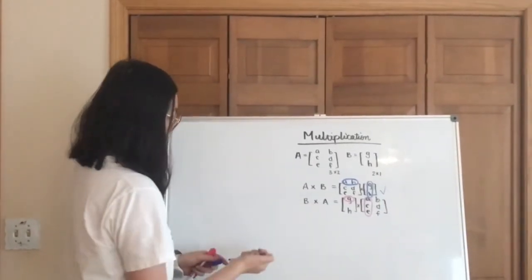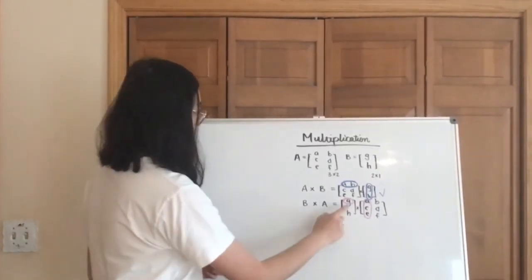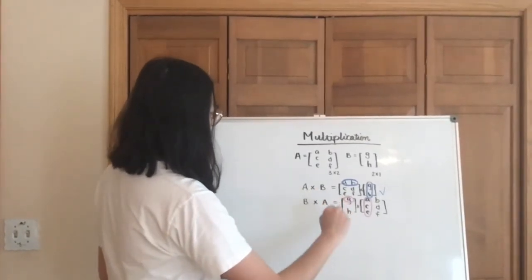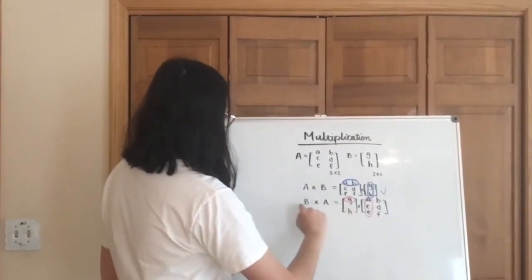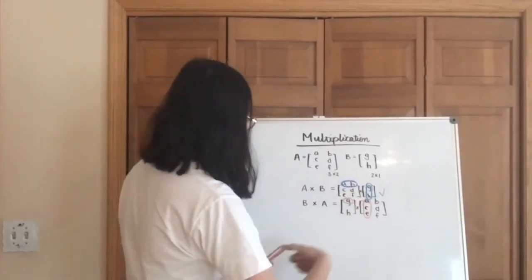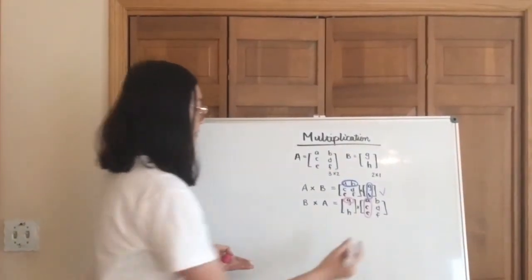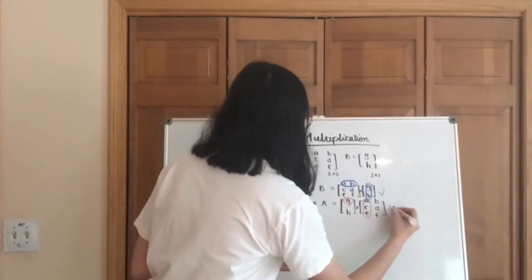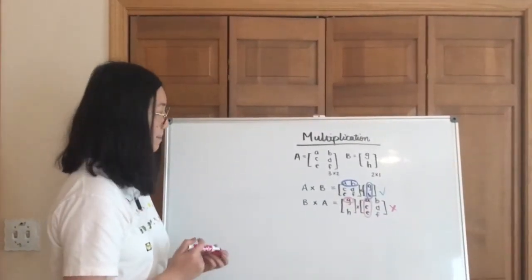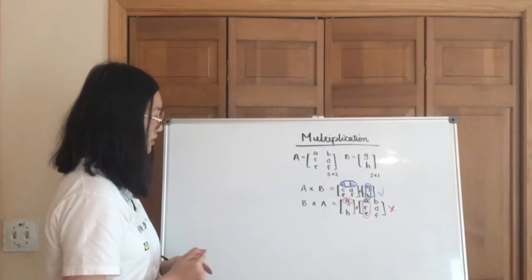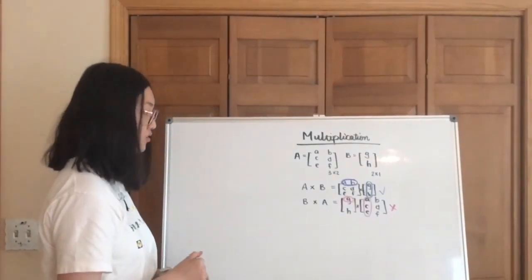However, in the second case, in b multiplied by a, you can see here that there's only one number in the first row in b, but then there are three numbers in the first column of a, so the dot product cannot even happen. So in this case, b multiplied by a would not be a valid action. So this is something really important to remember.